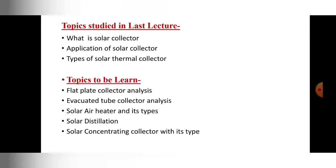In the last video, we discussed the different types of solar collectors. Basically two types of solar collectors are there: first is the non-concentrating solar thermal collector and second is the concentrating solar collectors. From non-concentrating solar collectors, we saw two types — flat plate collectors and evacuated tube collectors — and from concentrating solar collectors we saw four types. In today's lecture, we are particularly going to study the non-concentrating types.